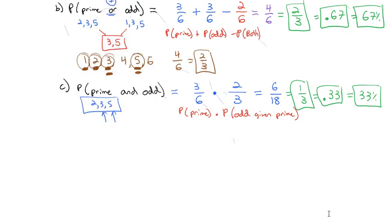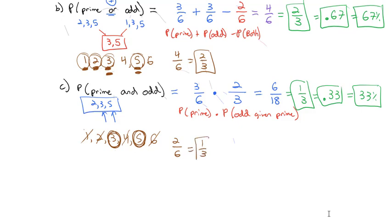Again, we could use the definition instead. The numbers are 1, 2, 3, 4, 5, 6. By definition, prime and odd: 1 is not prime; 2 is not odd; 3 is both prime and odd; 4 is neither; 5 is both; 6 is neither. So really there are 2 out of 6, which reduces to 1/3, that are both prime and odd at the same time. You can use the formula or the definition.